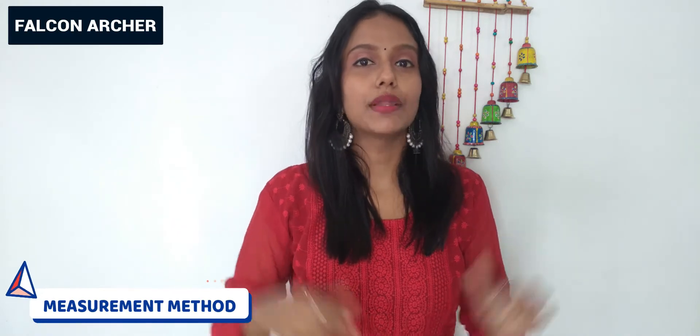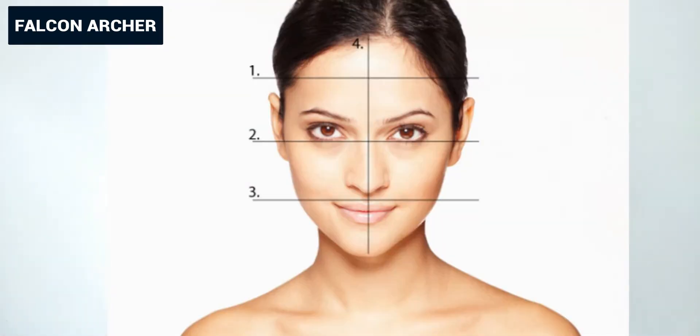Next one is the measurement method. We have to measure our forehead width — the right and left forehead, different widths, and the selection width. Next one is the cheekbone — we measure the right and left cheekbone. Next one is the jawline. This gives us different types of face shapes.